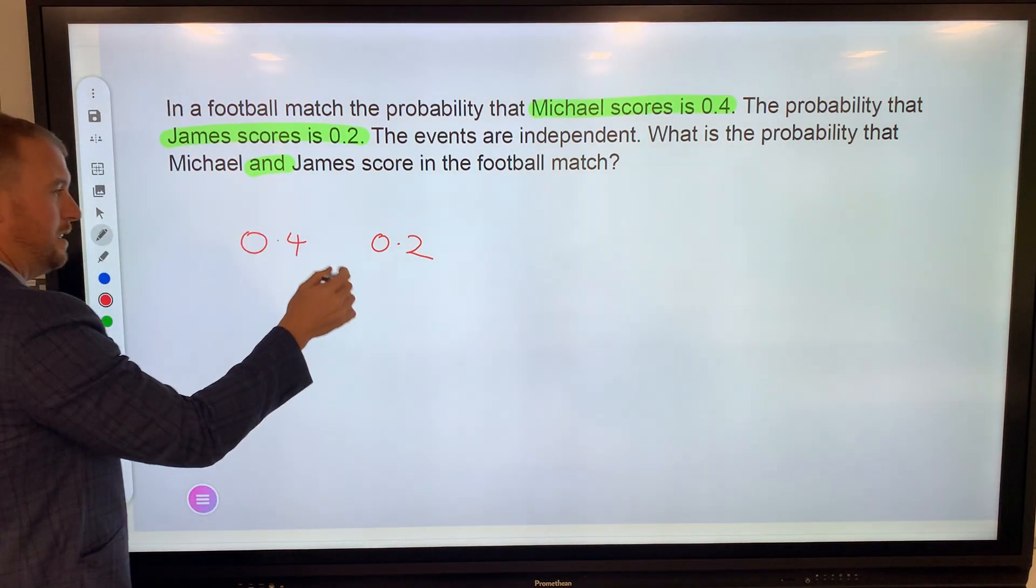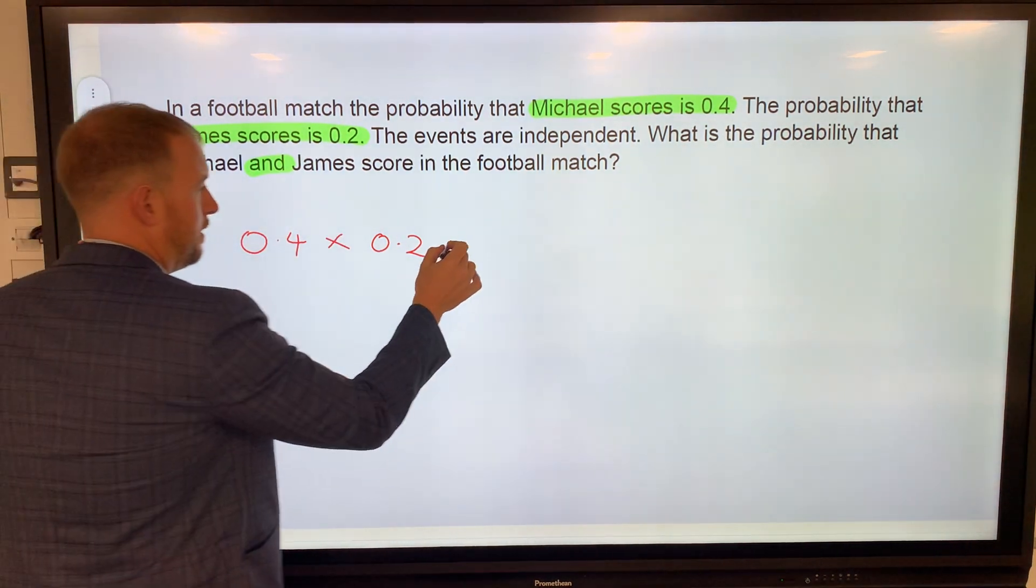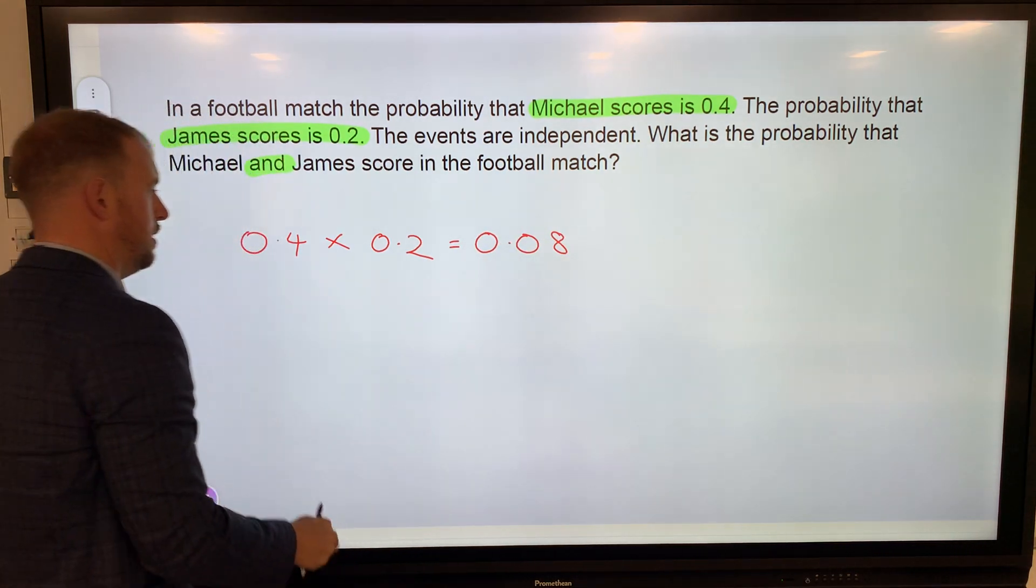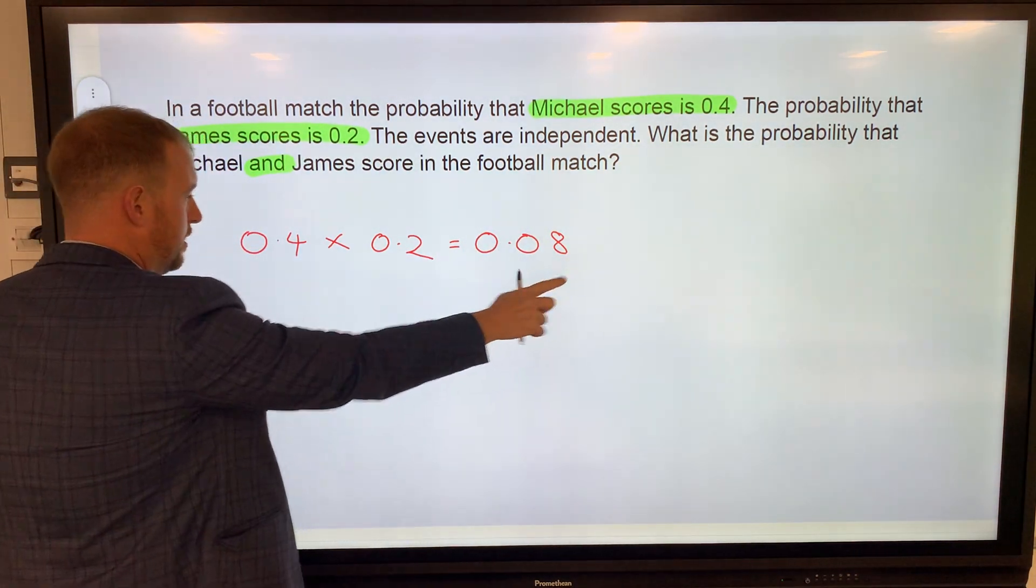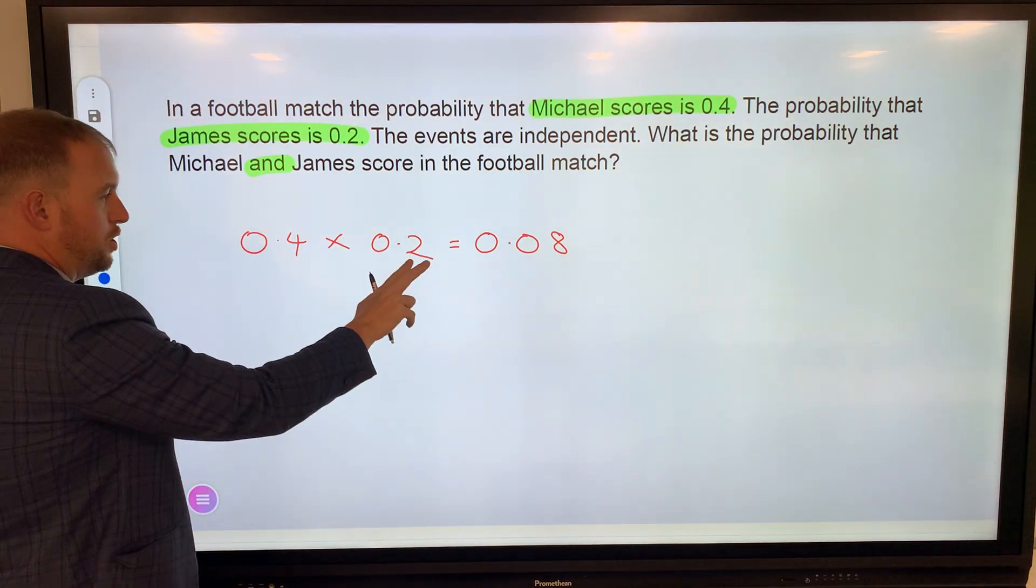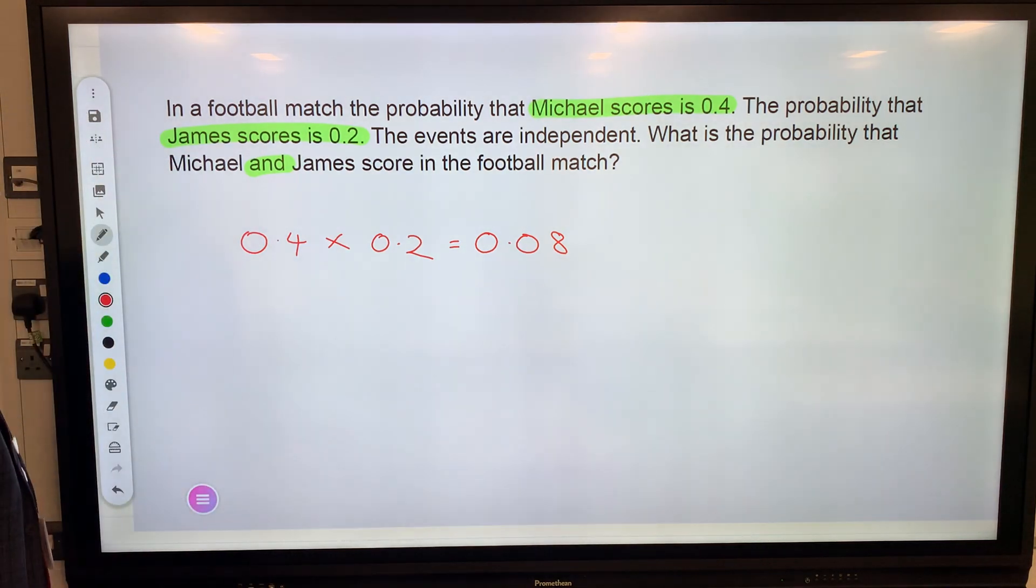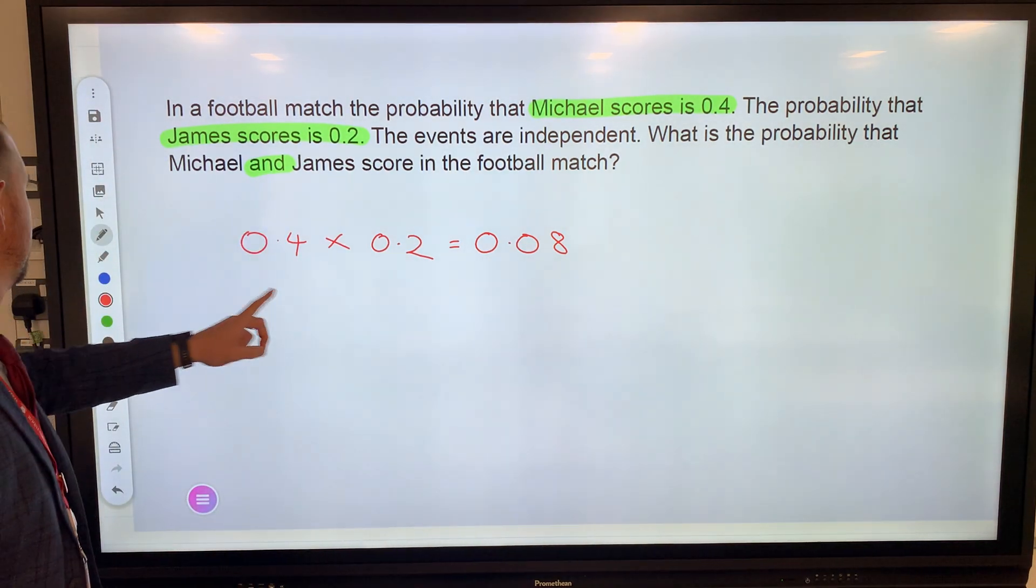Probability of Michael scoring is 0.4, probability of James scoring is 0.2. The word 'and' means we must multiply to give us an answer of 0.08. Again, 4 times 2 is 8, one decimal place, two decimal places—one and one is two. 'And' means multiply.